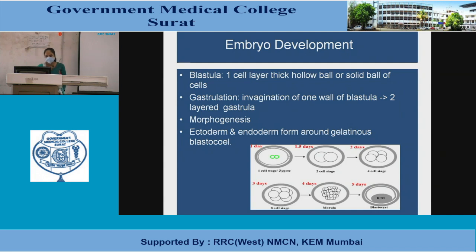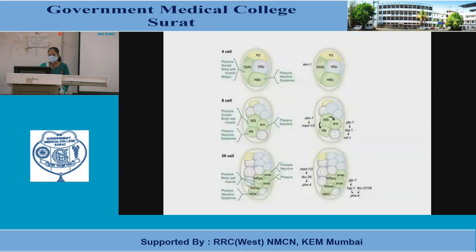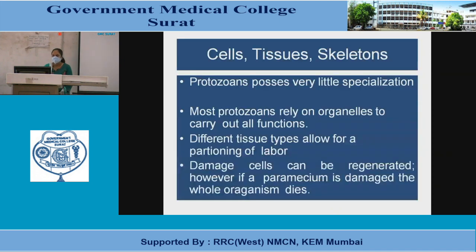Morphogenesis involves formation of ectoderm and endoderm around a gelatinous blastocyst. The embryo development timeline: day 1, first cell stage — zygote; day 1.5, 2-cell stage; day 2, 4-cell stage; day 3, 8-cell stage; day 4, morula; day 5, blastocyst. Development continues through 4 cells, 8 cells, 28 cells, then tissues and skeletons.